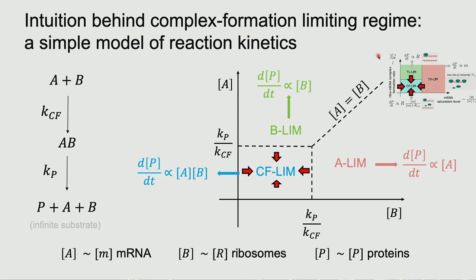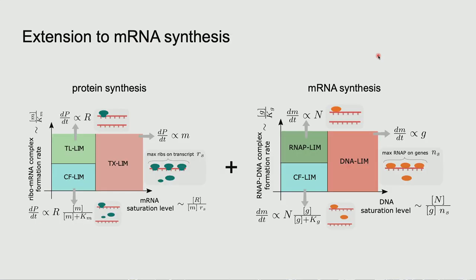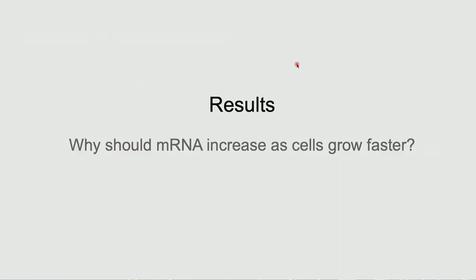You can make a similar kind of diagram for transcription as well, with DNA and RNA polymerases instead. For the purposes of this work, in the transcription layer of the model, we focus on the situation where mRNA synthesis is limited by RNA polymerases, but we're also exploring all the combinatorics here.